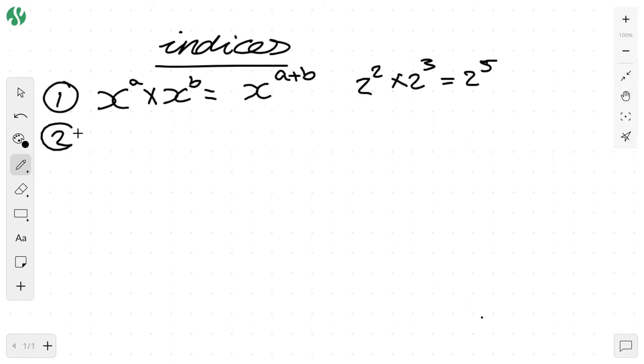Now for our second rule, it's going to be the opposite of rule number one. So if we take x to the a and we divide it by x to the b, we're going to get x to the a minus b. So 2 to the 3 divided by 2 to the 2 is going to equal 2 to the 1. Now 2 to the 1 just equals 2.